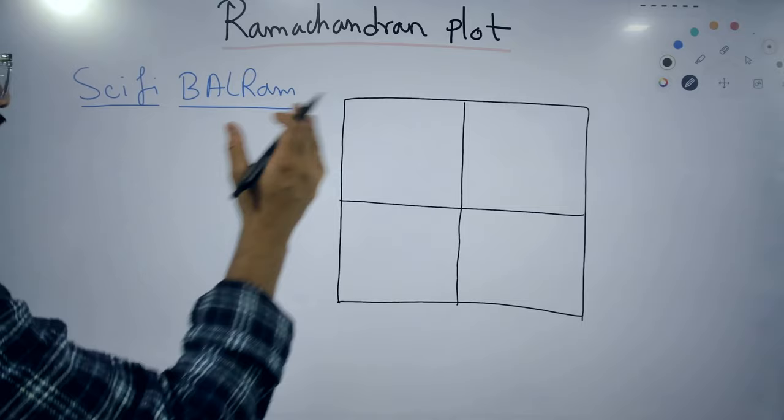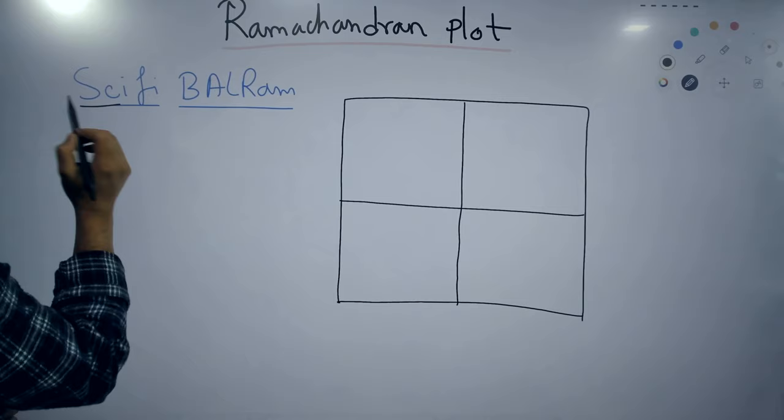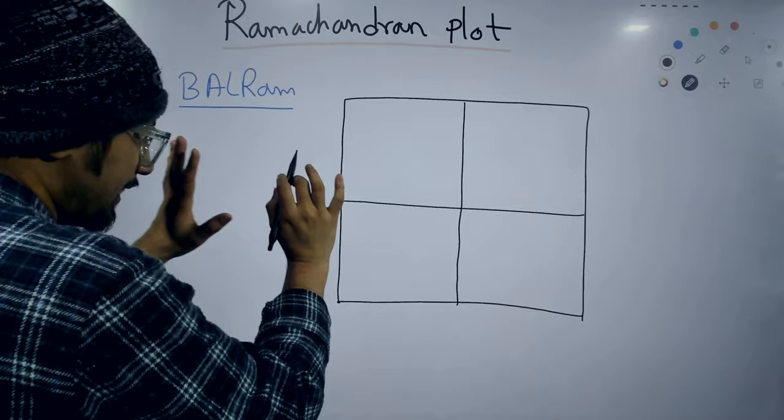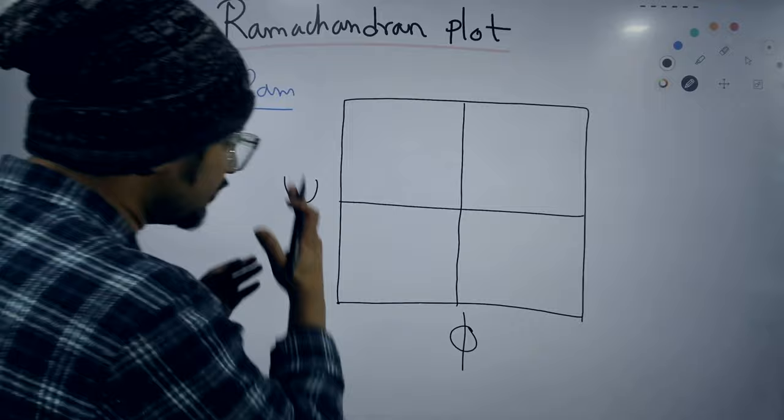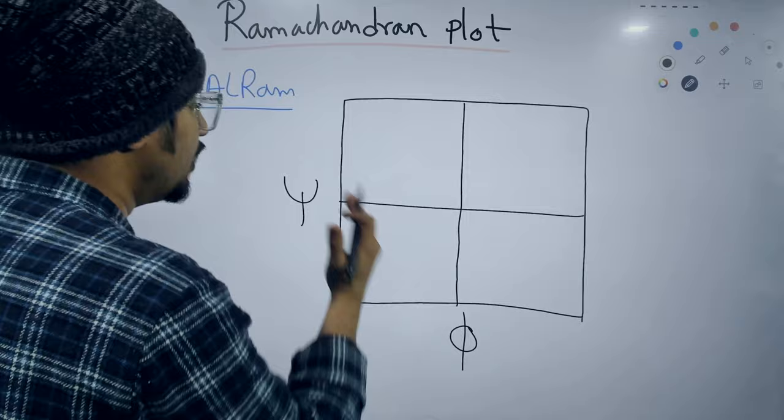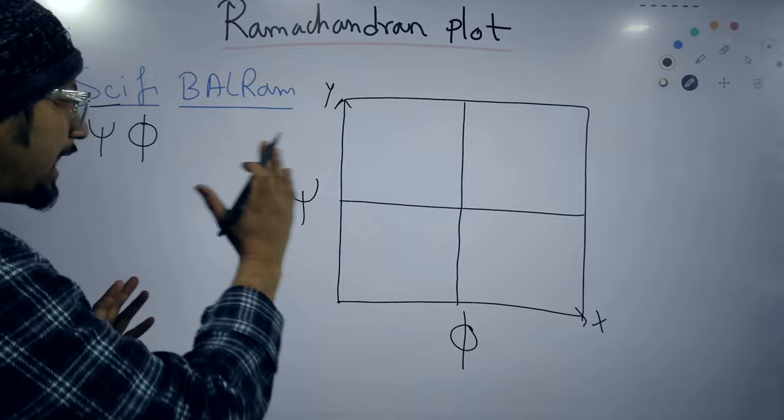Now comes the mnemonic: sci-fi. Sci means the two angles — first is psi and phi is the second angle. So we put psi on the y-axis and phi on the x-axis. That's why we have psi-phi — the y-axis is psi and the x-axis is phi.